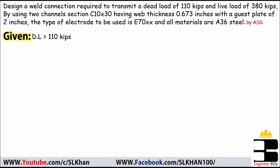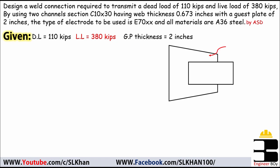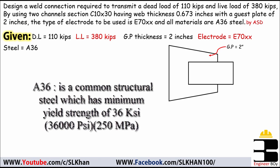The dead load acting is 110 kips — kip is the unit of load in the FPS system — and the live load acting is 380 kips. The gusset plate thickness is 2 inches, as shown, and the electrode is E70.